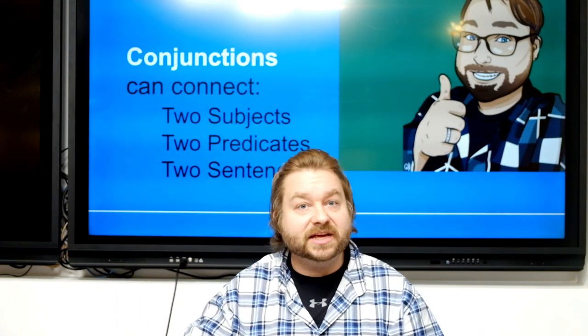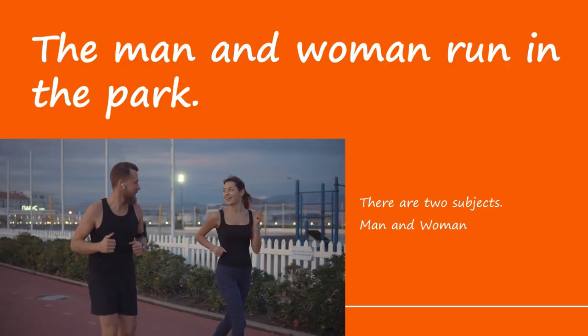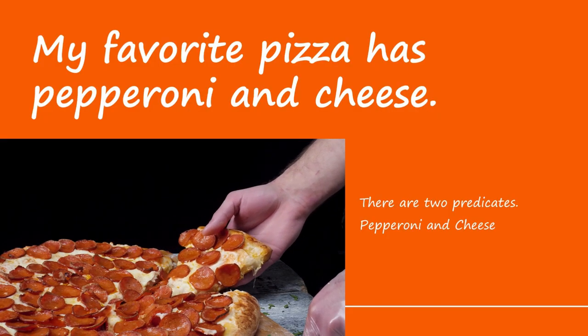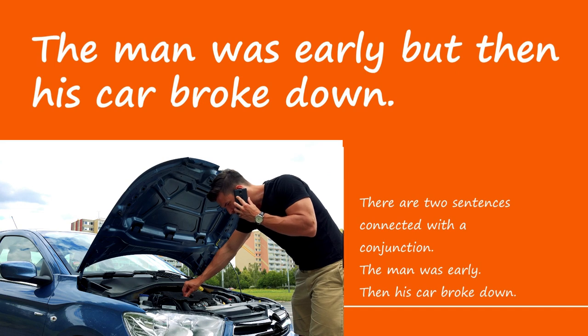Let's try some examples. 'The man and the woman run in the park' — there are two subjects: the man and the woman. We've joined two subjects. What about 'My favorite pizza has pepperoni and cheese'? 'My favorite pizza' is the subject, and 'has pepperoni and cheese' gives two things in the predicate. So we've joined two things in the predicate.